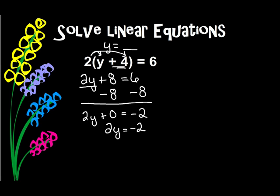Now, a letter and a number next to each other means multiply. The opposite of multiplying is dividing. So I'm going to divide by 2 — I divide by whatever the number is in front of the variable. But if I do it to one side, I have to do it to the other side. Well, 2 divided by 2 is 1, so I have 1y equals negative 2 divided by 2 is negative 1. Well, 1y is the same thing as just y, so I get y equals negative 1.